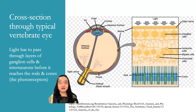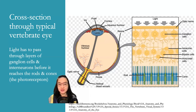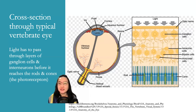Cross-section through a typical vertebrate eye. Light has to pass through layers of ganglion cells and interneurons before it reaches the rods and cones — the photoreceptors. Light comes through the optic nerve, then through the ganglion cells, and at the bottom of the picture you can see the rods and cones.